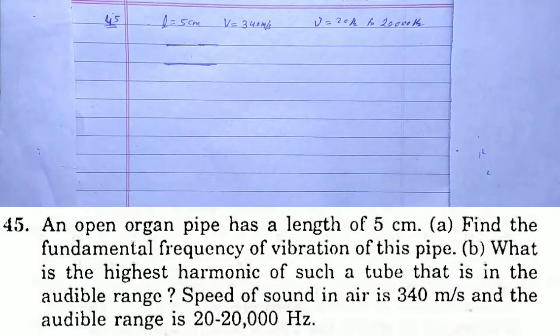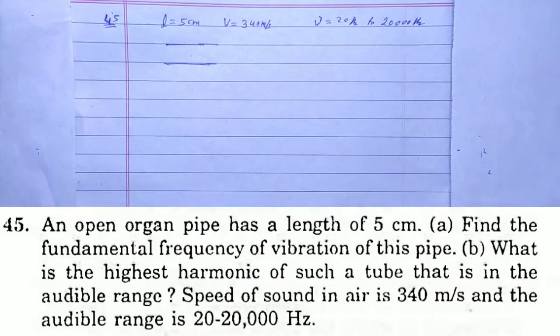Solution to Chapter 16, Sound Waves, Question 45. An open organ pipe has a length of 5 centimeters. Part (a): Find the fundamental frequency of vibration of this pipe. Part (b): What is the highest harmonic in the audible range? Speed of sound is 340 m/s and the audible range is 20 Hz to 20 kHz.